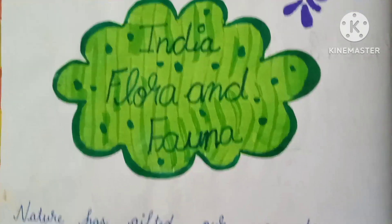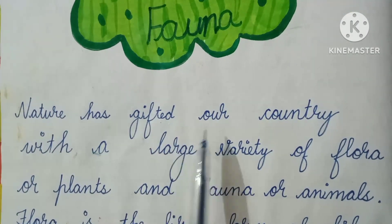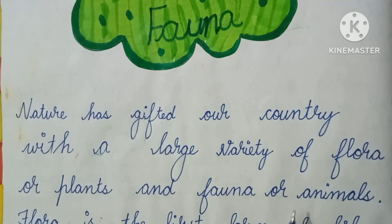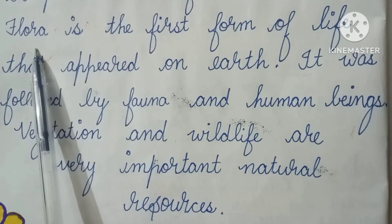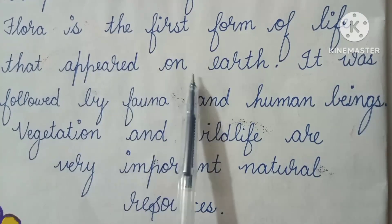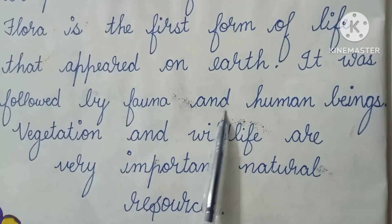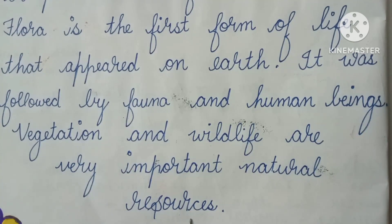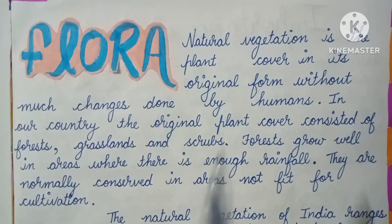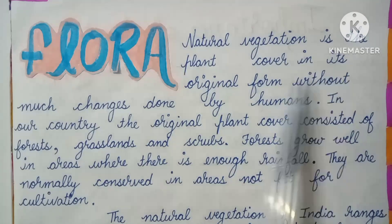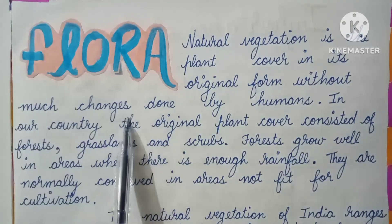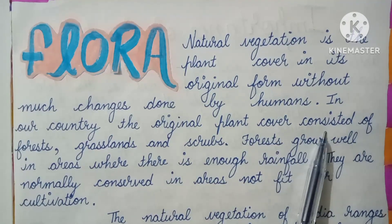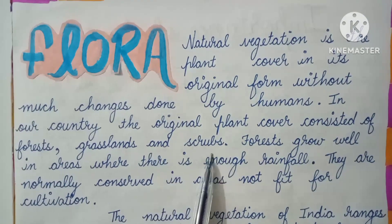India Flora and Fauna. Nature has gifted our country with a large variety of flora (plants) and fauna (animals). Flora is the first form of life that appeared on earth, followed by fauna and human beings. Vegetation and wildlife are very important natural resources. Natural vegetation is the plant cover in its original form without much change done by humans. In our country, the original plant cover consisted of forests, grasslands and shrubs.